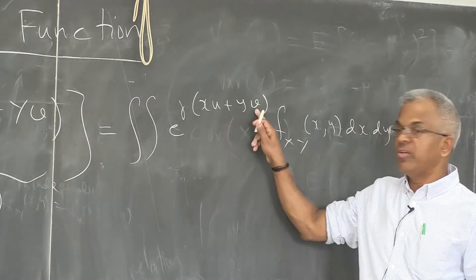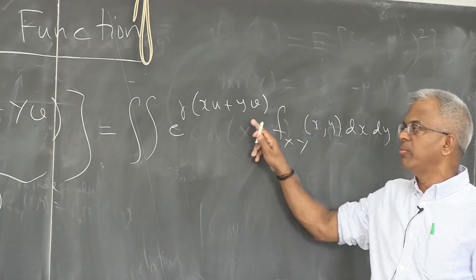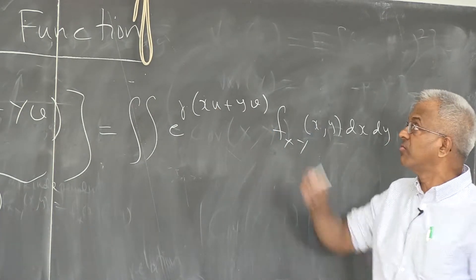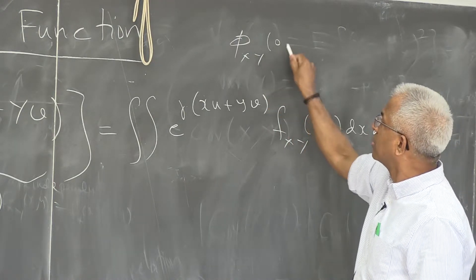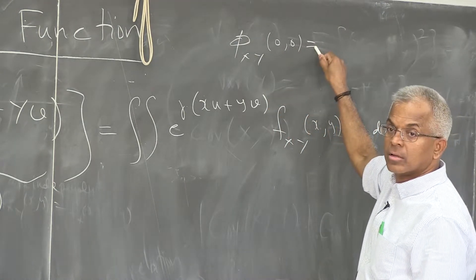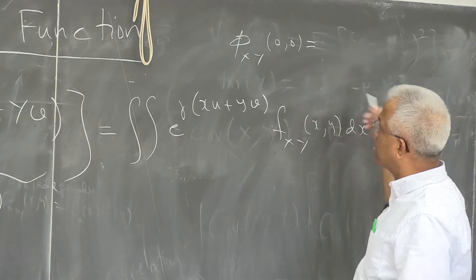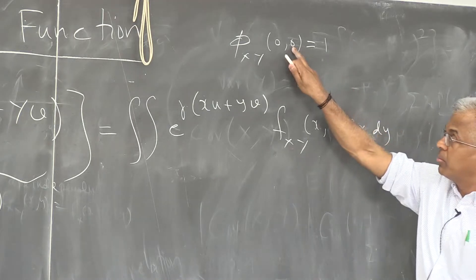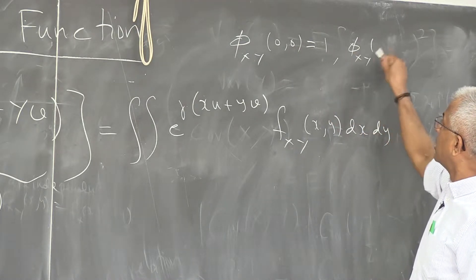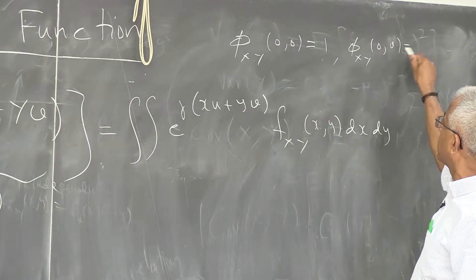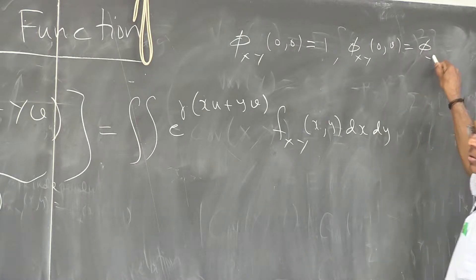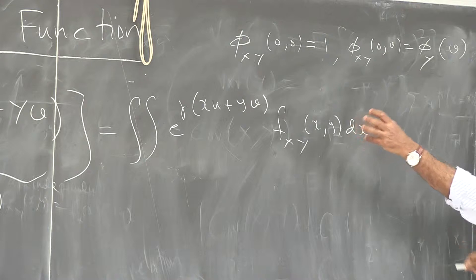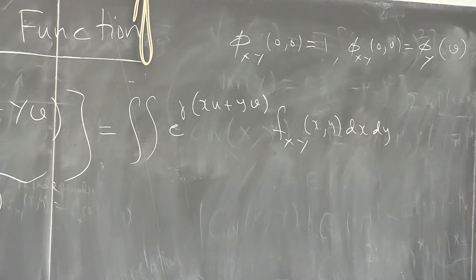If you put u and v equal to 0, what do you get? The characteristic function evaluates to 1. So the joint characteristic function contains information about the marginal characteristic functions — put v equal to 0 and you get the characteristic function of X; put u equal to 0 and you get the characteristic function of Y.